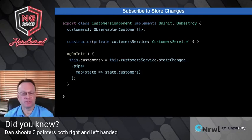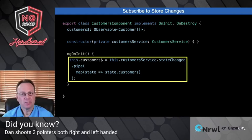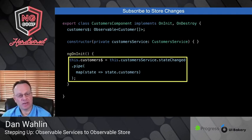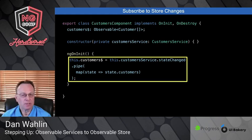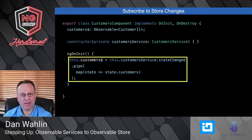Observable Store exposes a stateChange observable that we can subscribe to. Assuming I'm using an async pipe, I call customerService.stateChange, pipe the data that comes in, and only grab the customers. This is the most primitive way; you can also do a state slice selector and other things. Then we bind customers to an ngFor using the async pipe.